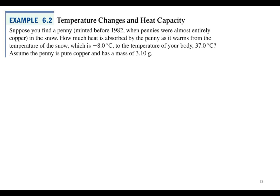So we're in Telluride, Colorado. We find a penny in the snow and it's negative eight degrees Celsius. It warms up to the temperature of your body, which is 37.0 degrees Celsius. How much heat is absorbed by the penny? So assume the penny is pure copper. We're going to need that because we're going to need the specific heat of copper. So our new handy-dandy equation is Q equals MC delta T.